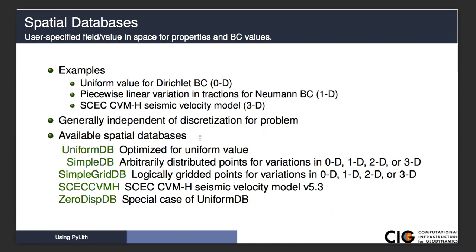A very simple spatial database is, say we have a uniform value for a displacement on a boundary condition. That would be a uniform value, and we would generally call that a zero-dimensional spatial database, because we can specify that value by a single point. In another case, we may have Neumann boundary conditions where we're specifying tractions on the boundary, and we want to have a linear variation of those tractions. We may use a spatial database that would give us a piecewise linear variation. Because we have a piecewise linear variation, we can specify that with points along a line, and so we call that a 1D spatial database.